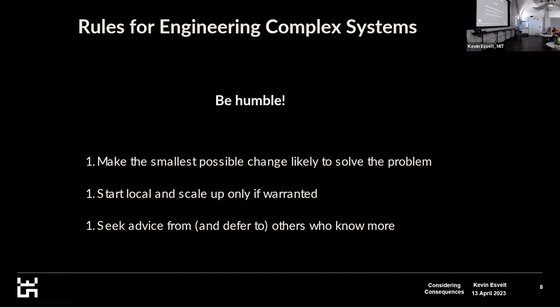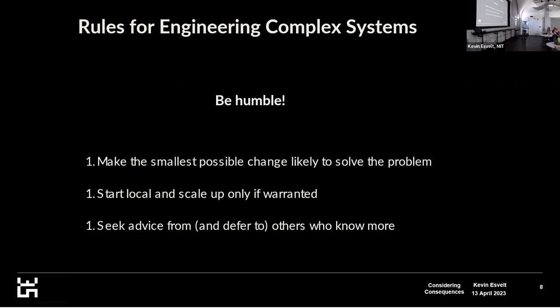What we're doing here is trying to be humble. This is difficult when you're playing with radical new technologies, especially when the incentives are to publish and do radical new things and get in the news. But I have three rules — and they're all number one because they're all very important. If you're engineering any complex system that you don't fully understand, there are going to be unexpected consequences when you mess with it. So the best you can do is try to make the smallest possible change that you think will solve the relevant problem, because there are going to be side effects. Perturbation should be only as large as it needs to be.